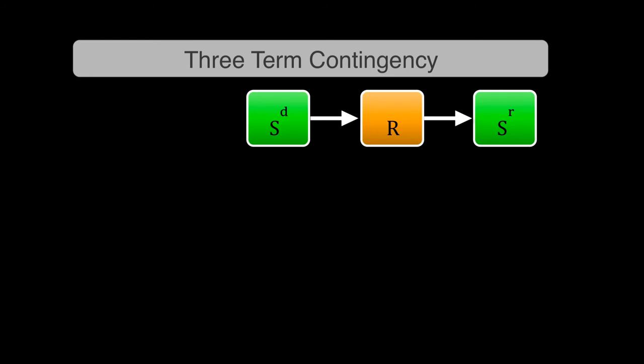And so those are your core pieces. Now let's add in another one: motivating operations, MOs. There's two types, right? An EO and an AO, and then there's more breakdowns than that—you get the CMOs and all that stuff. So we're just going to call it an MO to make it easy.